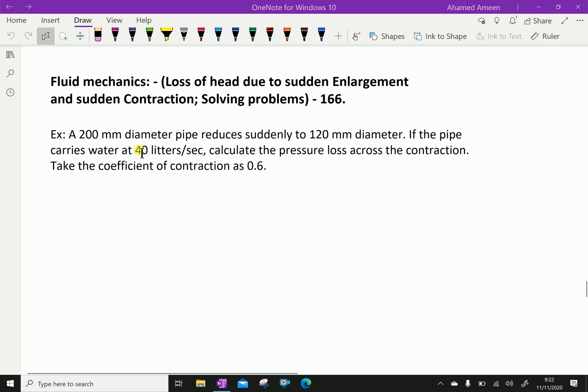A 200 mm diameter pipe reduces suddenly to 120 mm diameter. If the pipe carries water at 40 liters per second, calculate the pressure loss across the contraction. Take the coefficient of contraction as 0.6.